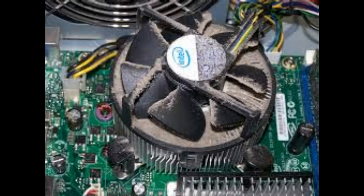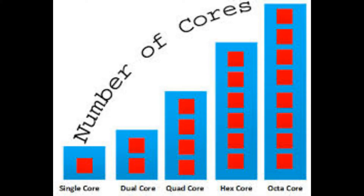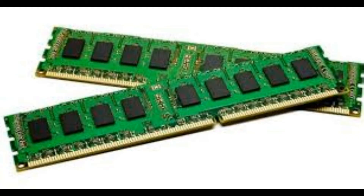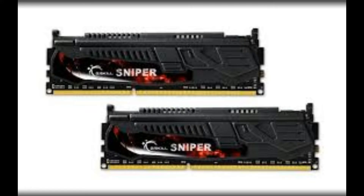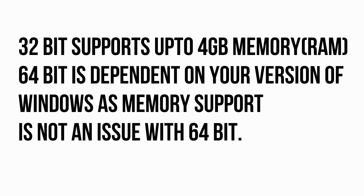32-bit processors are essentially a dying breed, as 64-bit processors — unlike 32-bit — allow for dual, quad, and octa-core designs. This supports higher memory storage than 32-bit can, allowing you to have RAM over 4 gigabytes, which is the maximum a 32-bit system can support.